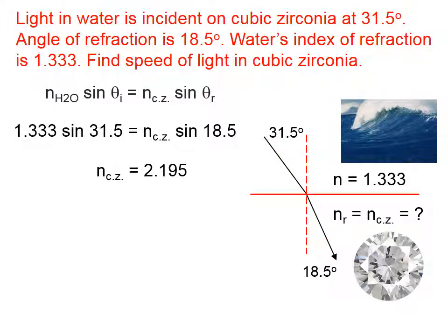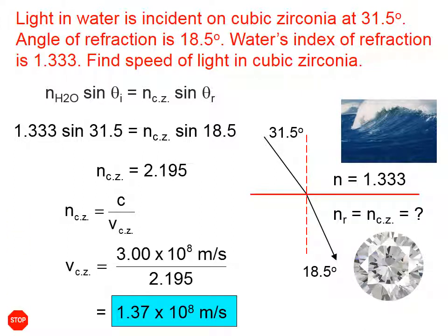The index of refraction is simply a ratio of the speed of light through empty space compared to the speed of light through the medium. So now, if we use the definition of the index of refraction, solve it for the speed of light in the medium, we'll get this expression. And there's the speed of light through cubic zirconia.